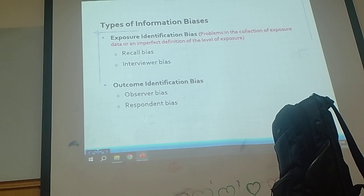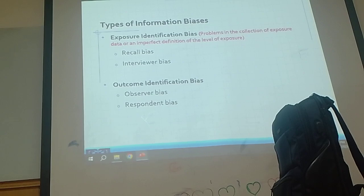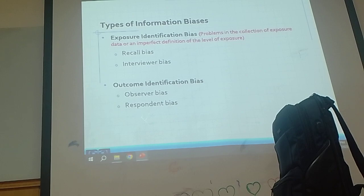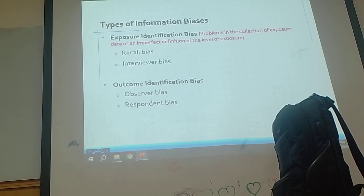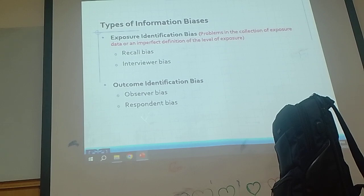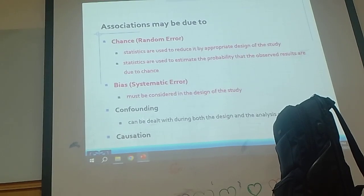There are many types of information bias, and as I said before, you don't need to memorize all of them. But I want you to hear the names: recall bias, interviewer bias, observer bias, and responder bias. These are very modern and complicated terminologies in epidemiology.